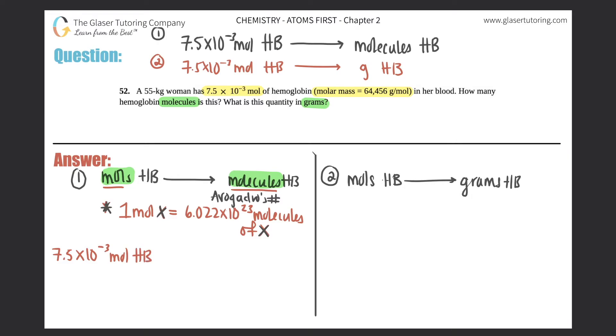So moles of hemoglobin goes on the bottom, molecules of hemoglobin goes up on top. Well, what are the numbers that go in these two parts of the ratio? We know that one mole of anything equals 6.022 times 10 to the 23rd molecules of that same thing. So this should be 6.022 times 10 to the 23rd molecules of hemoglobin. Moles of hemoglobin cancels out and you get your answer.